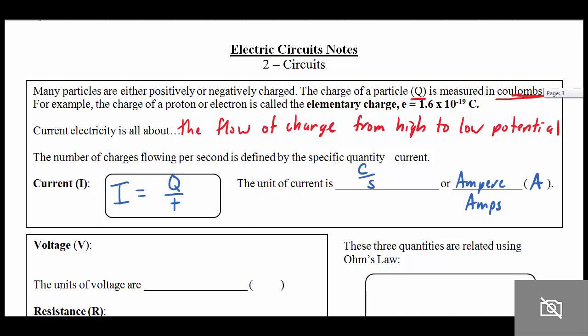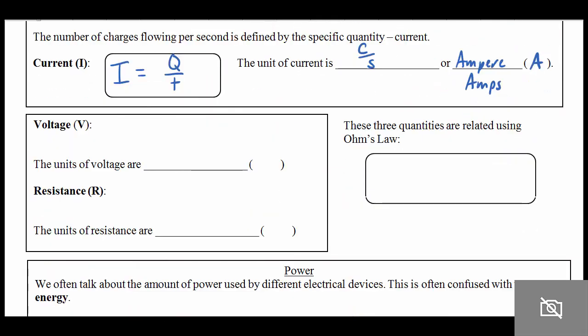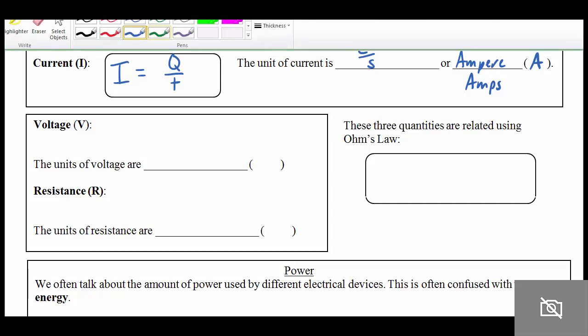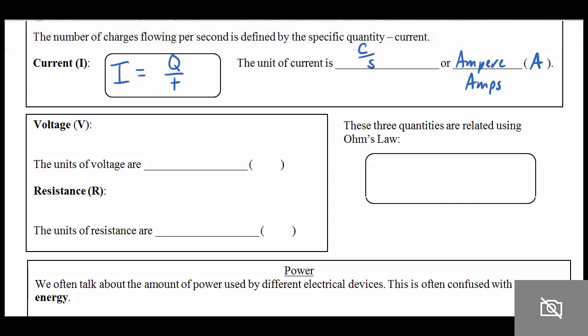To fully understand circuits, we need to talk about two other quantities as well: voltage and resistance. You'll probably remember a little bit about voltage. If you ever look at any battery, it tells you how many volts the battery gives you. Voltage really is the amount of push, or the amount of energy that is causing the charges to flow through the circuit.